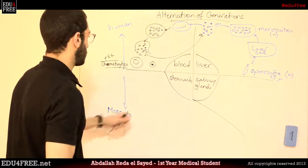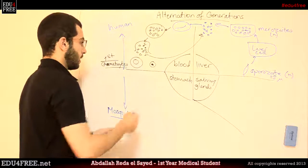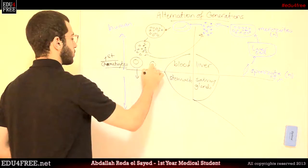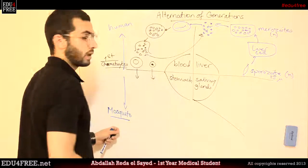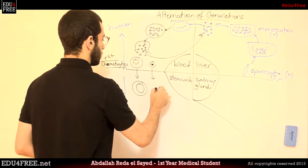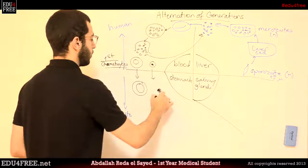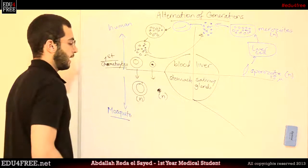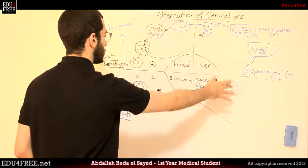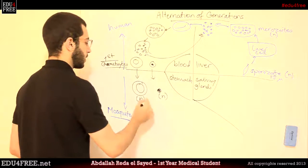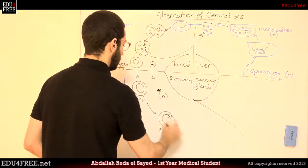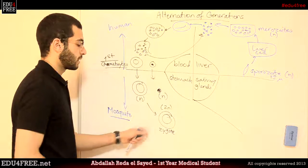When another mosquito sucks blood from this infected person, the gametocytes begin to migrate into the stomach of the mosquito and they develop into gametes. The male gamete has N chromosomes and the female gamete has N chromosomes. This is when the sexual reproduction occurs — they fuse and form the zygote with 2N chromosomes.